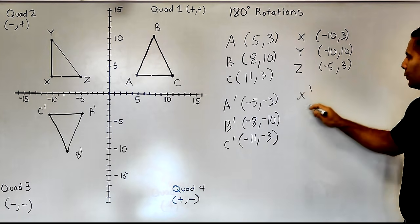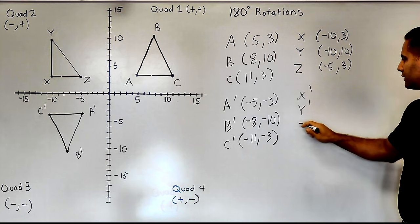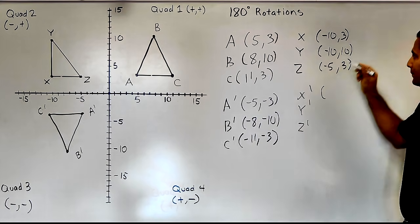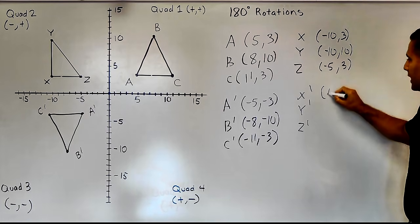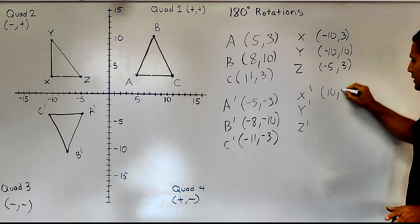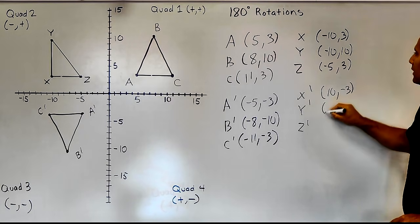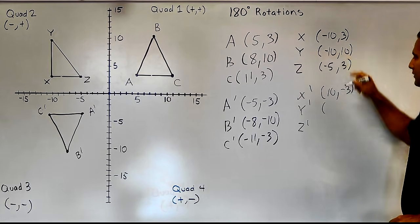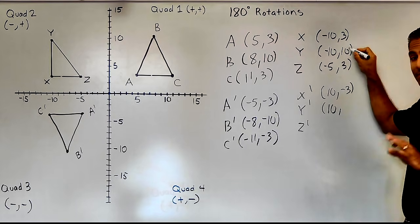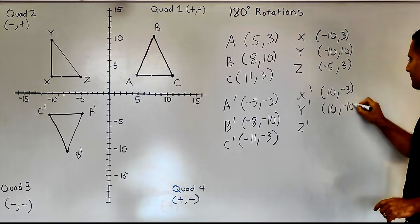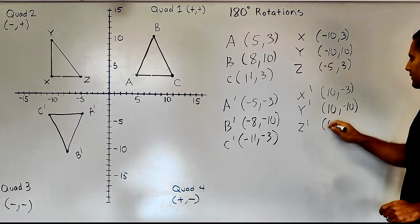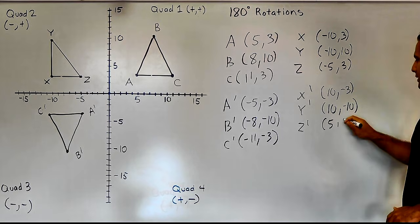We are going to rotate this 180 degrees by taking each value and writing its opposite integer. So we change negative 10 to positive 10, but since 3 is positive, we change that to negative 3. For Y, negative 10 becomes positive 10 and positive 10 becomes negative 10. And for point Z, negative 5 becomes positive 5, and positive 3 becomes negative 3.